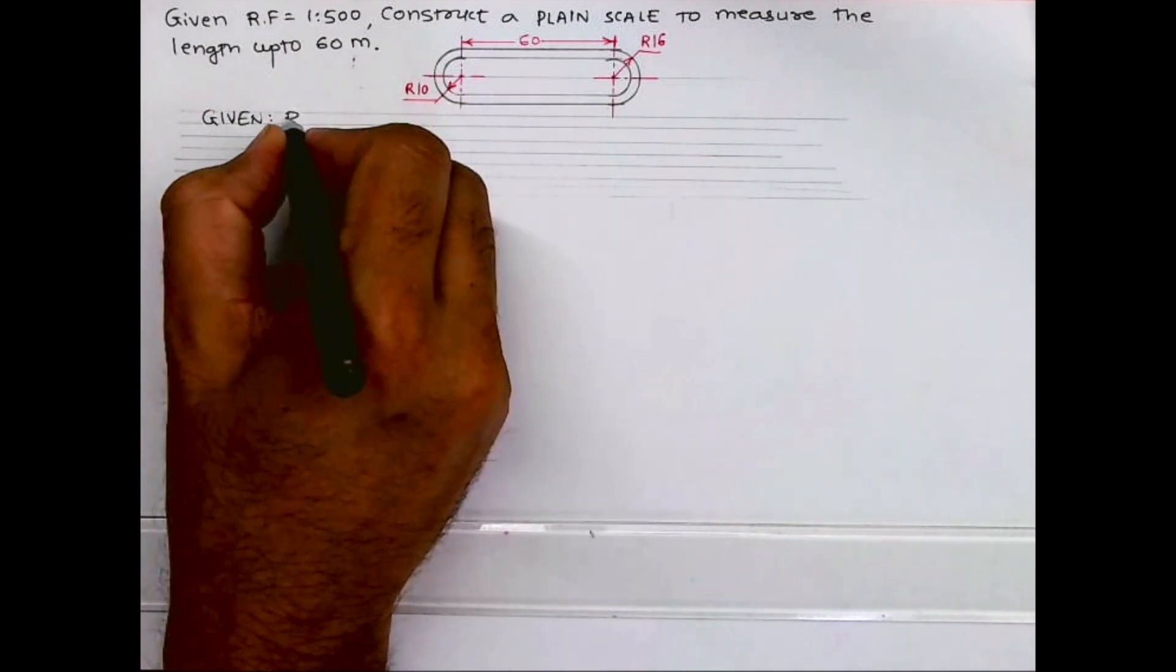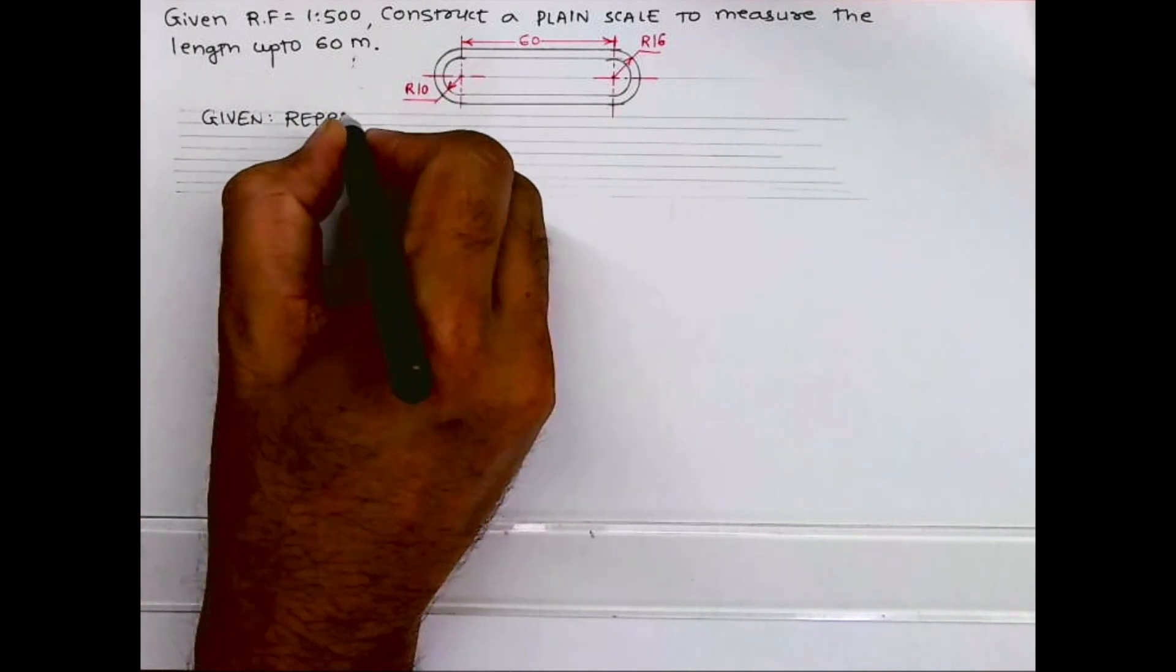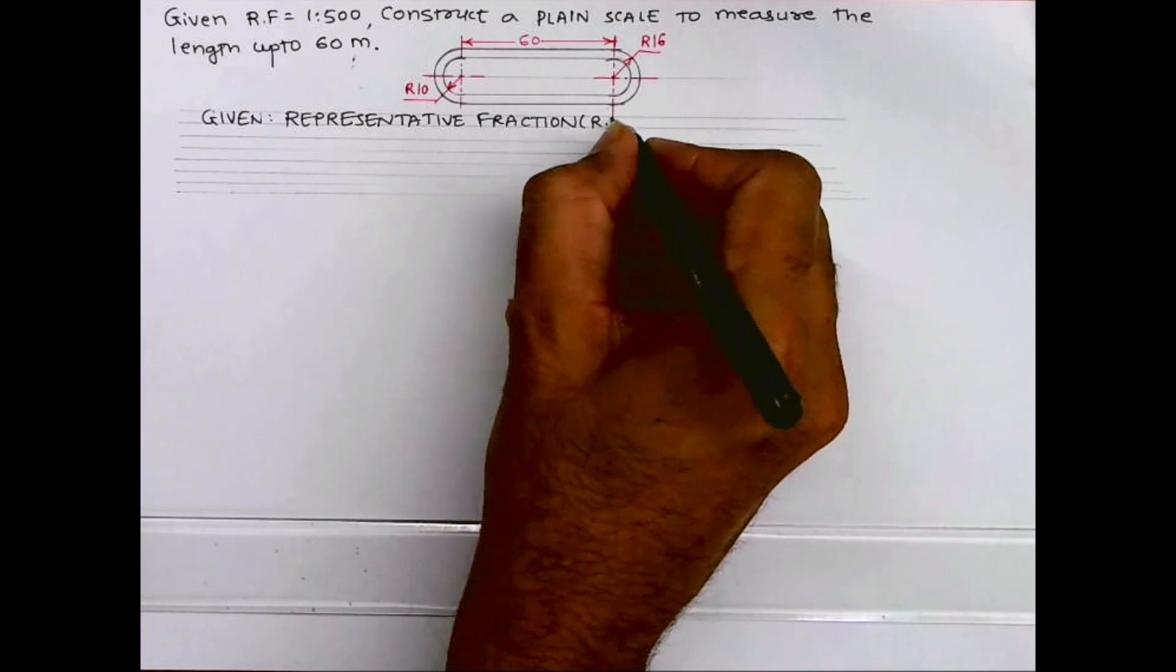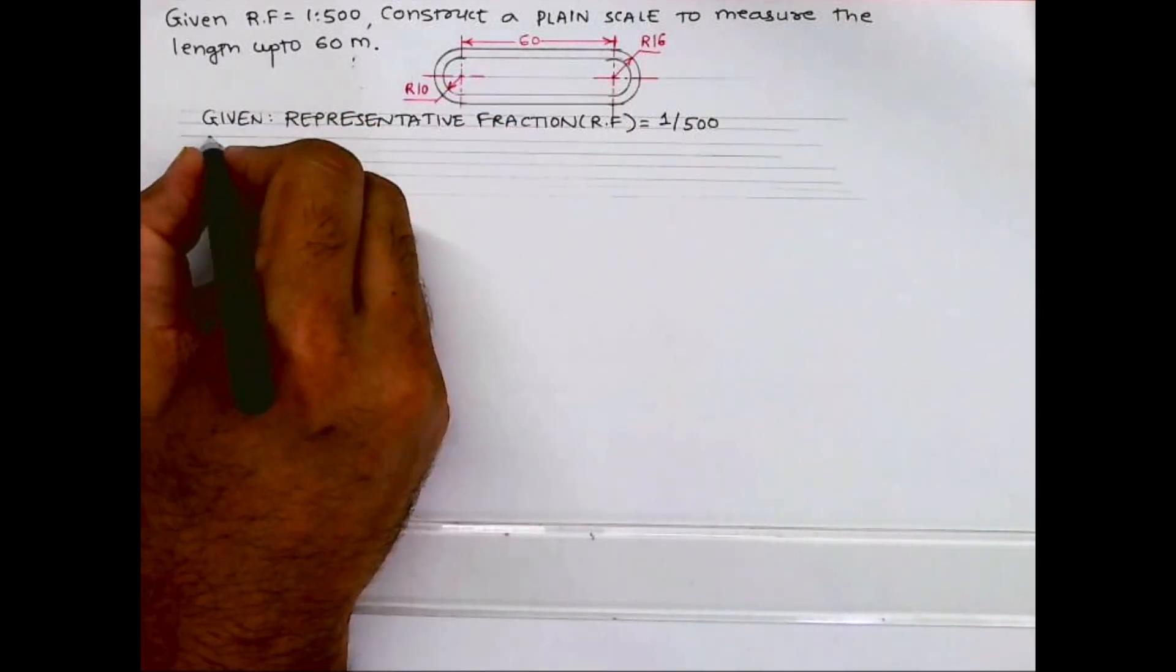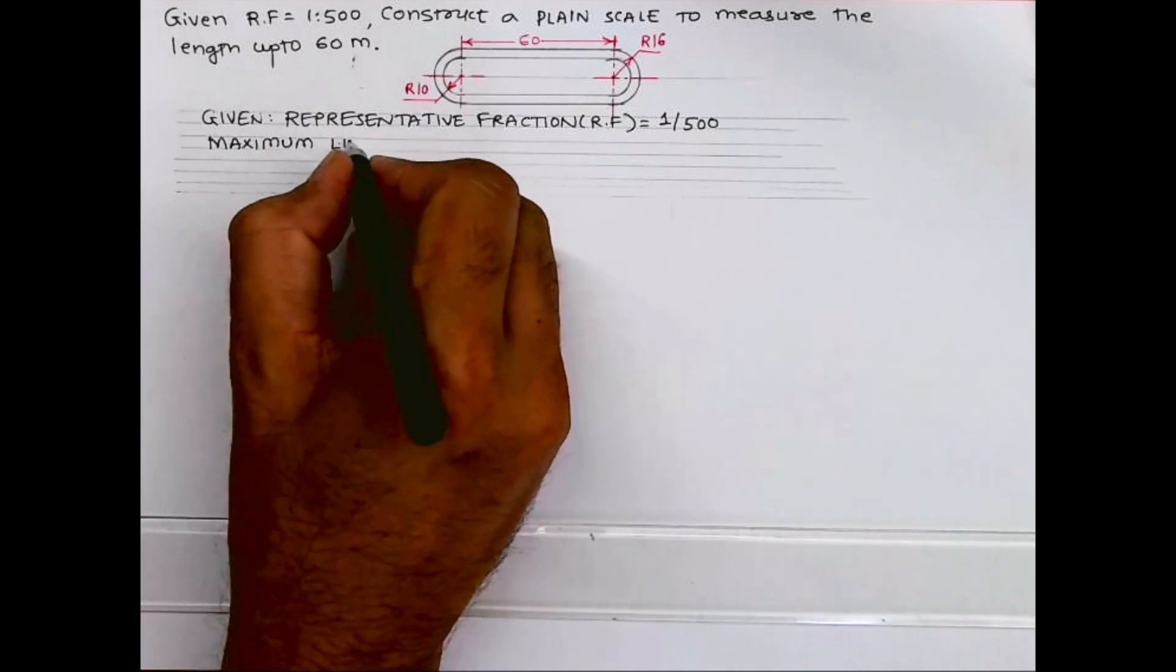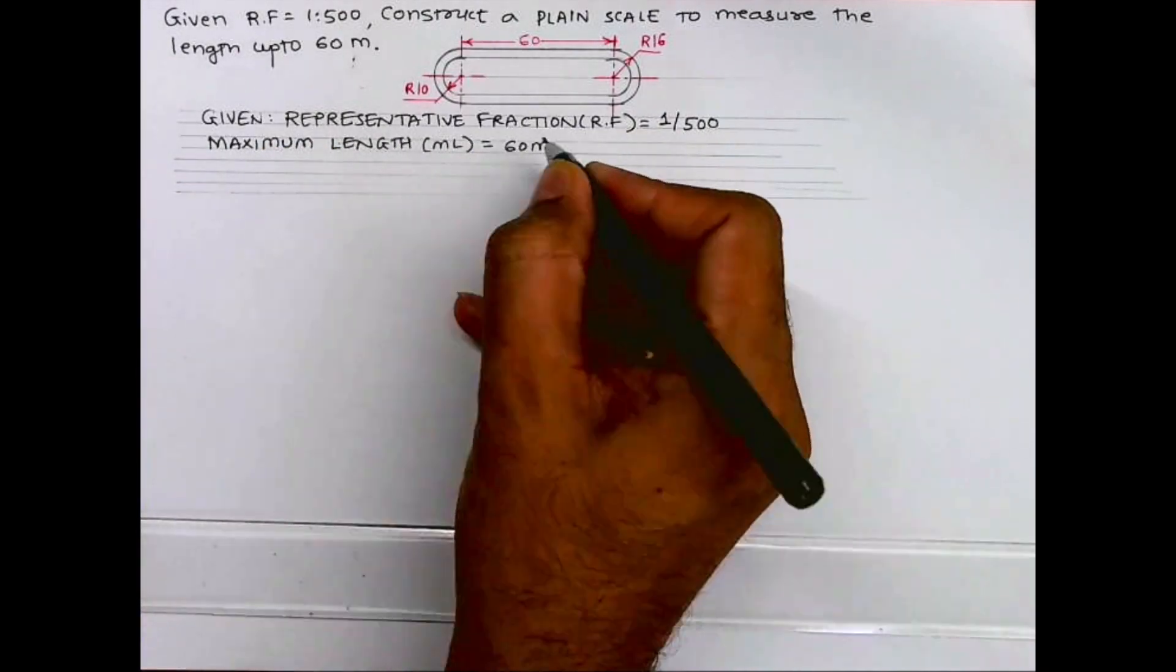First, we will write the given data: the representative fraction is 1 upon 500, and the maximum length is 60 meters.